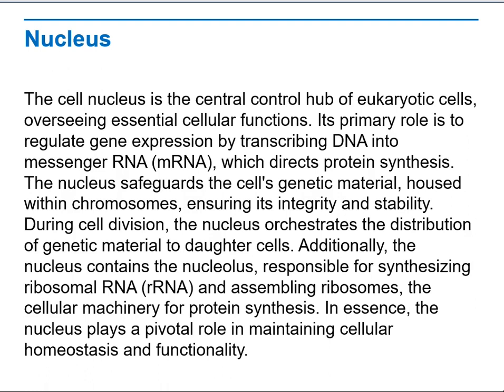The cell nucleus is the central control of eukaryotic cells. Its primary role is to regulate gene expression by transcribing DNA into messenger RNA, which directs protein synthesis. The nucleus safeguards the cell's genetic material, housed within chromosomes, ensuring its integrity and stability during cell division. It orchestrates the distribution of genetic material to daughter cells. Additionally, the nucleus contains the nucleolus, which is responsible for synthesizing ribosomal RNA and assembling ribosomes, the cellular machinery for protein synthesis.